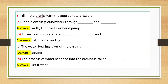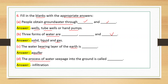Next: fill in the blanks with appropriate answers. People obtain groundwater through wells and tube wells or hand pumps. Three forms of water are solid, liquid and gas. The water-bearing layer of earth is called an aquifer. The process of water seepage into the ground is called infiltration.